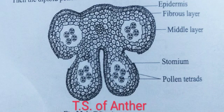It develops from the primary parietal cells. It is formed beneath the middle layer as a single homogenous layer of cells around the sporogenous tissue. The cells of the tapetum are large, radially elongated, multinucleate, syncytial, and contain dense cytoplasm and a prominent nucleus.